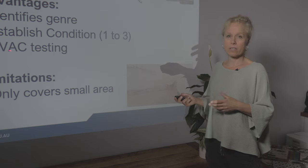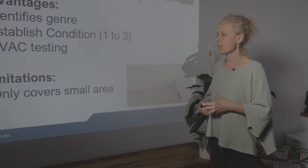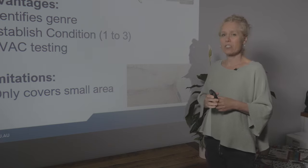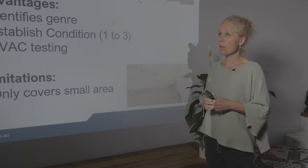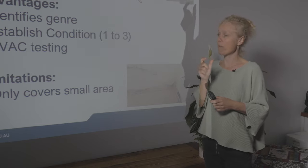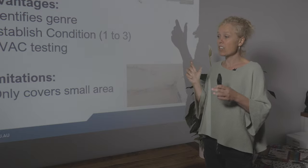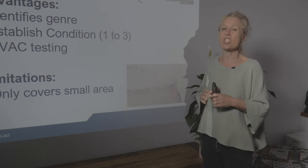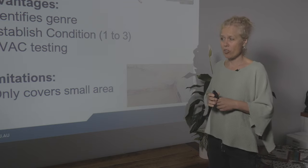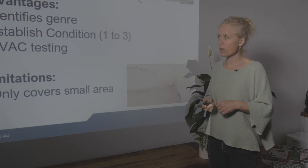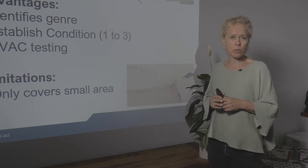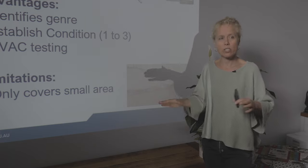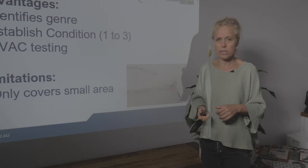Surface sampling is very useful for testing air conditioning systems. The limitations: it only covers a tiny area — just a square inch — so you can only make judgements about that square inch. At $70–$80 per sample for lab costs, make sure you justify there's moisture or visible mould before doing that sample. Surface samples are also very important in an empty building where no one has been there for more than a month, since you won't find much on air samples.